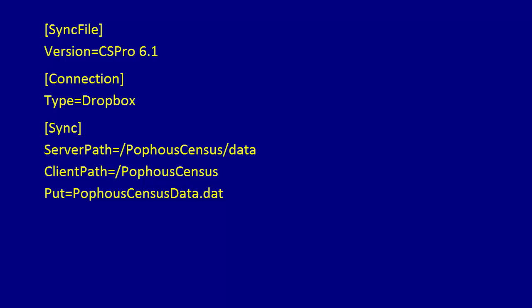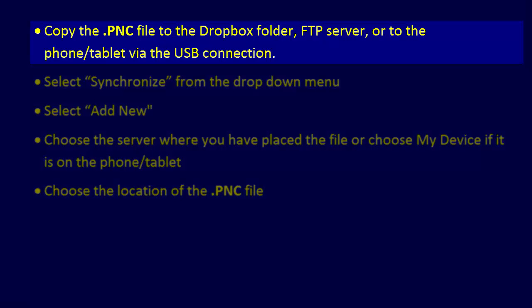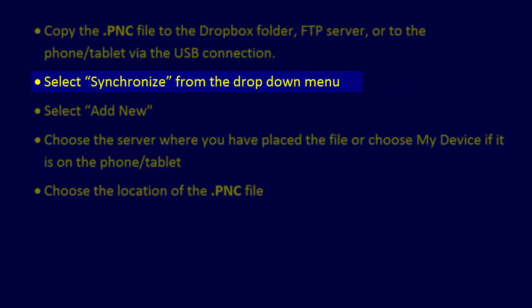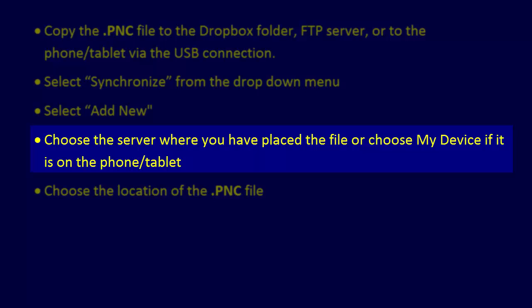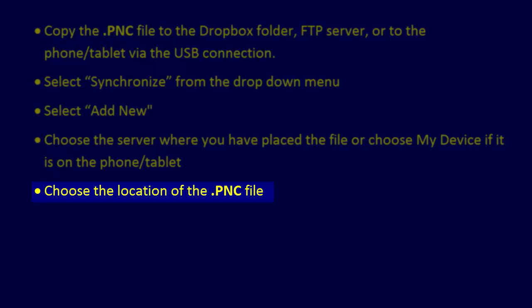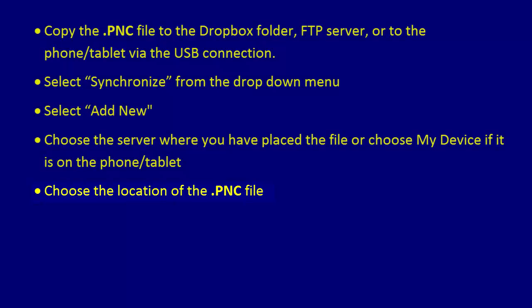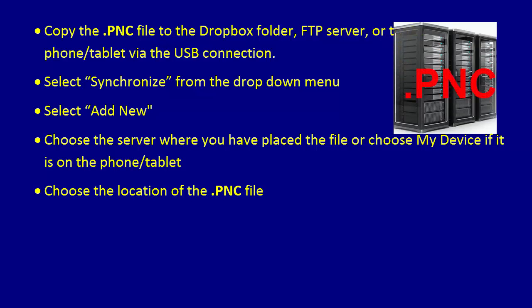To add the synchronization to the Synchronize menu on the tablet, use the same method as used to add the synchronization from the .pff file. Follow these five steps: Copy the .pnc file to the Dropbox folder, FTP server, or to the phone or tablet via USB connection. Select Synchronize from the drop-down menu. Select Add New. Choose the server where you have placed the file, or choose My Device if it is on the phone or tablet. Then choose the location of the .pnc file. CS Pro connects to the server and finds the .pnc file.